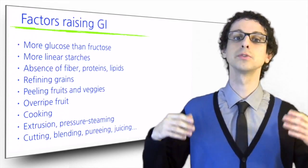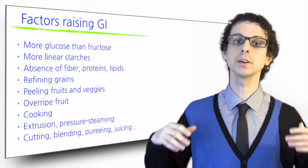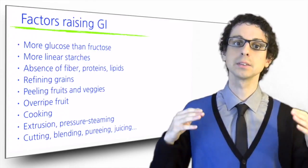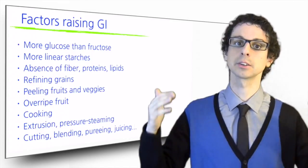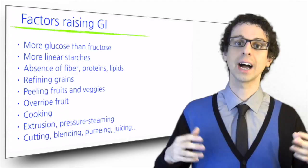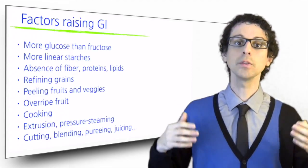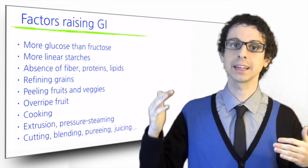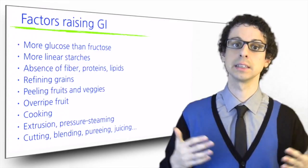As far as fruit is concerned, the degree of ripeness influences the GI. As the fruit ripens, its acids are converted to sugars, the texture becomes softer, and the GI tends to increase. An overripe banana will have a higher glycemic index than one that's still green.